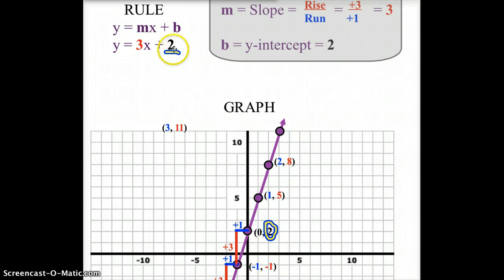The 2 right here stands for, well, where did it cross the y-intercept? At positive 2. Positive 1, positive 2. Right there.